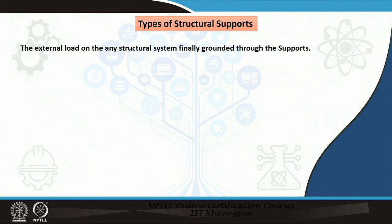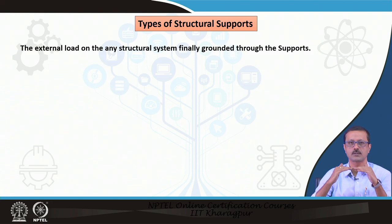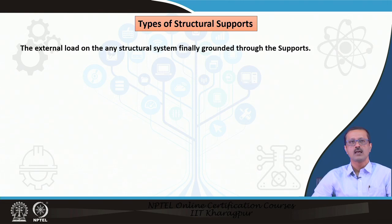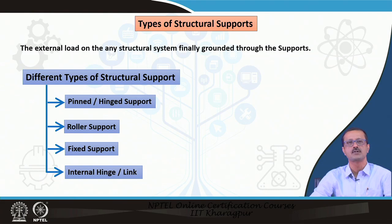Supports are the external system which is associated with a structural member to ground the loading applied as external loading. For example, when sitting in a chair, the external loading on the chair is my weight — 50 kg or 60 kg. The load is distributed to the ground by 4 legs, and at the junction of the legs and the ground, that system is called the support system.